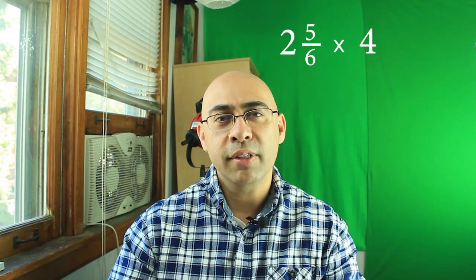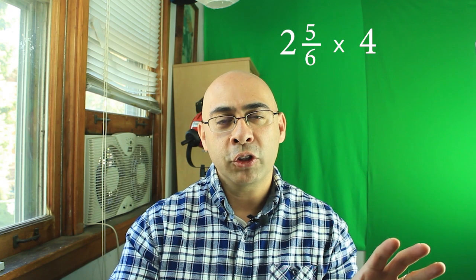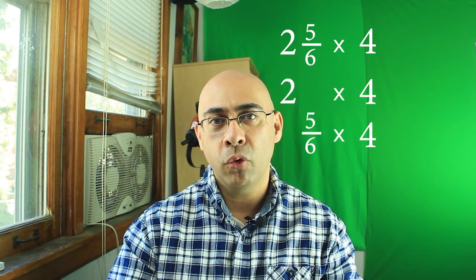So let's try this example, two and five-sixths times four. We make sure to multiply the two and the five-sixths by four. So two times four is eight, so we put that off to the side.